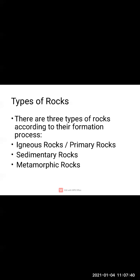Now we are going to study the types of rocks. We studied about the formation of rocks — how they are formed by natural processes. There are three types based on the formation process: first, igneous rocks or primary rocks; second, sedimentary rocks; and third, metamorphic rocks.